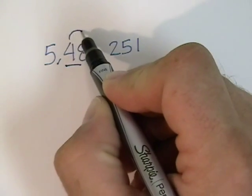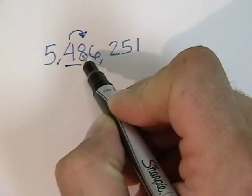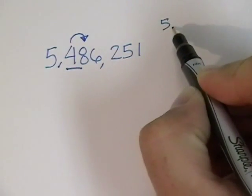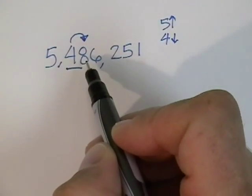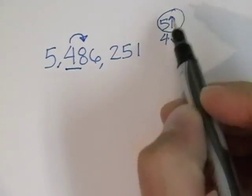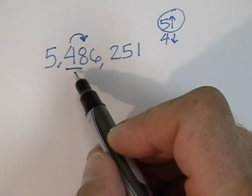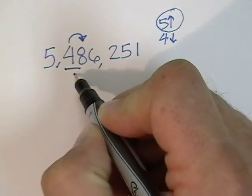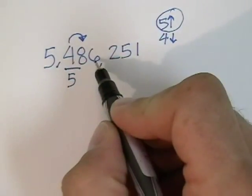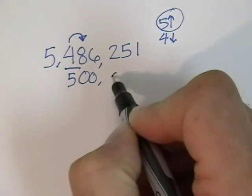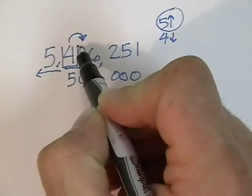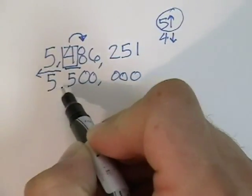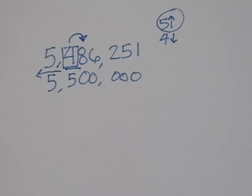Next, we look to the right and see if this number is 5 or more, or 4 or less. Because it's an 8, that's a number that's 5 or more. So then this 4, we add one more — so this 4 becomes 5. All these other digits become zeros, and this 5, because it's to the left of the 4, we just bring that down. So this number rounded to the nearest hundred-thousand is 5,500,000.